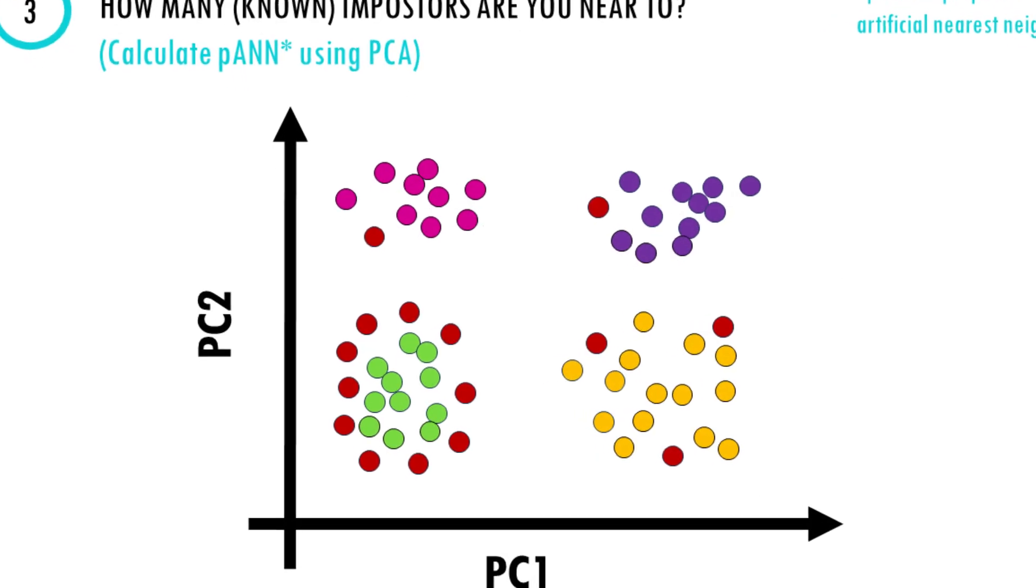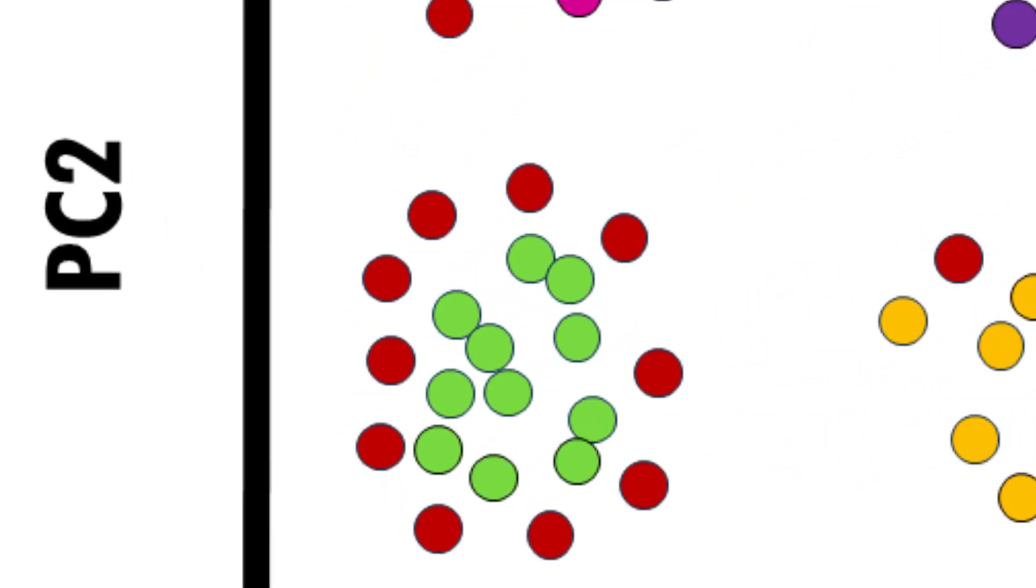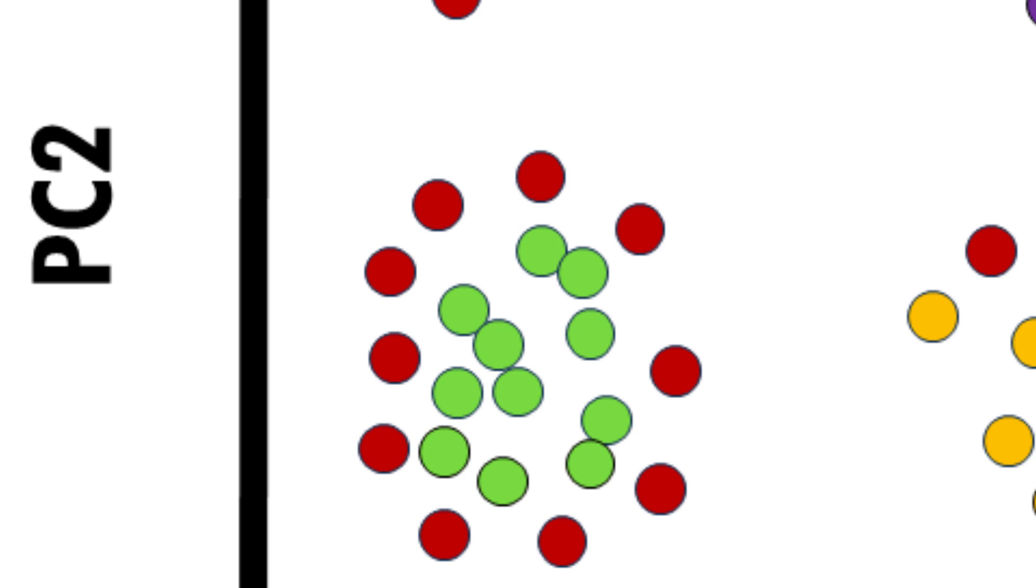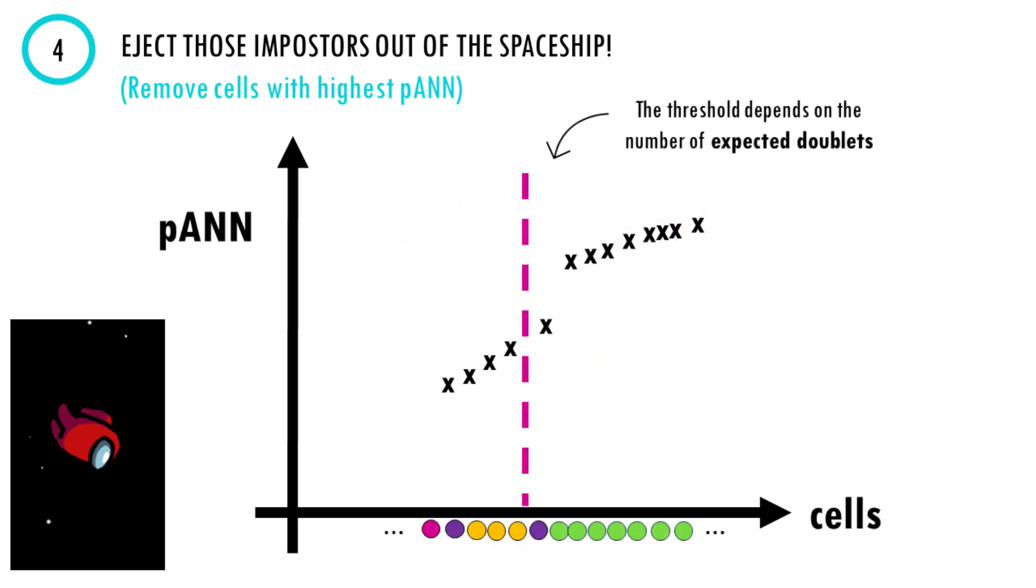And finally, step four. As you can imagine, a cell that is co-localizing in the PC space with many artificial doublets is most likely to be a doublet too. So DoubletFinder basically marks cells with the top pANN values as doublets. How many? Well, that depends on how many doublets you expect in your dataset, which is an argument you need to give DoubletFinder.